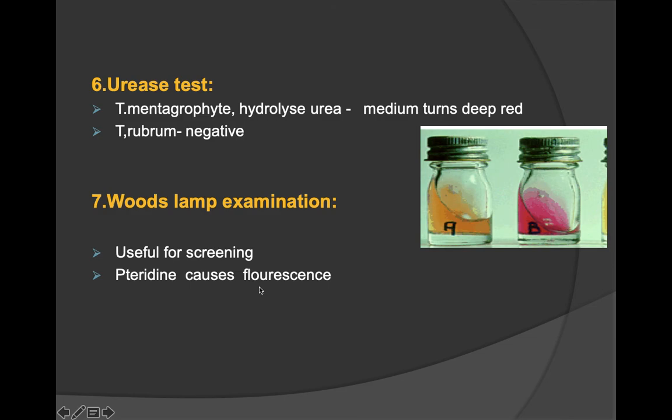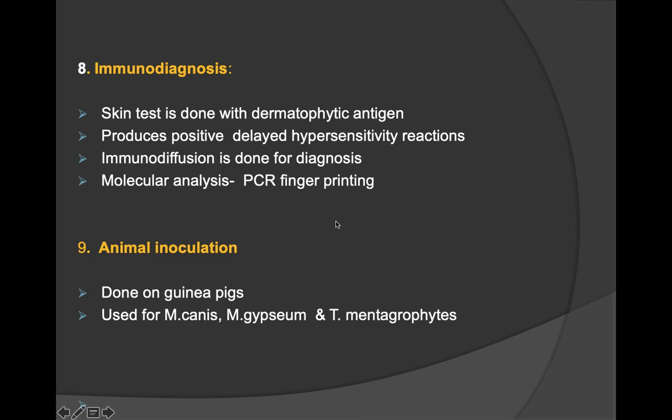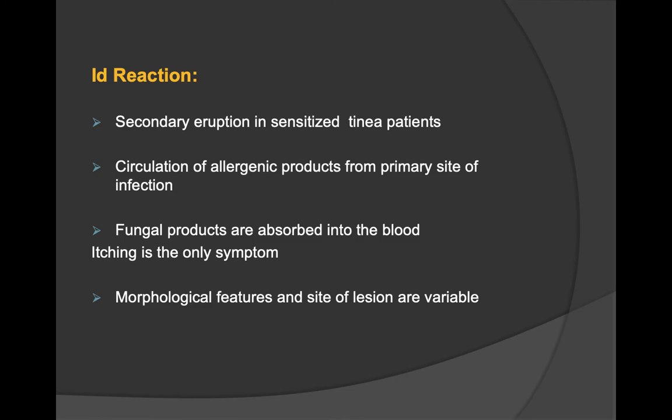The urease test shows that T. mentagrophytes hydrolyzes urea, turning the medium deep red, whereas T. rubrum is negative. Wood's lamp examination shows fluorescence due to pteridine, useful for screening. Immunodiagnosis includes skin test with dermatophyte antigen producing a positive delayed hypersensitivity reaction; immunodiffusion and PCR can also be used.